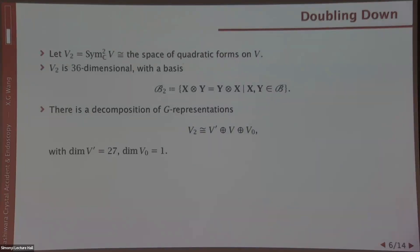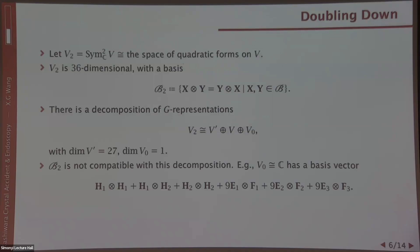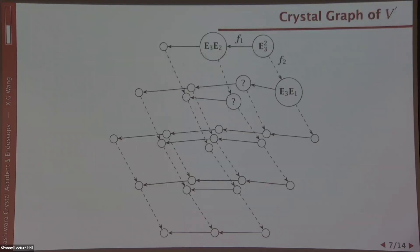For simplicity for V2, I will only be focusing on the V prime part because this is the new part. Note that this basis V2 is not compatible with the decomposition. For example, the trivial representation is spanned by the following basis, which is not a form of X tensor Y. Nevertheless, with more work, it is still possible to draw the combinatorial essence of V2 into a diagram in a similar fashion as V. This is the result—this is the V prime part. The question marks in the diagram just mean when you go deeper into the diagram, you need more work. So this is our second Kashiwara crystal.